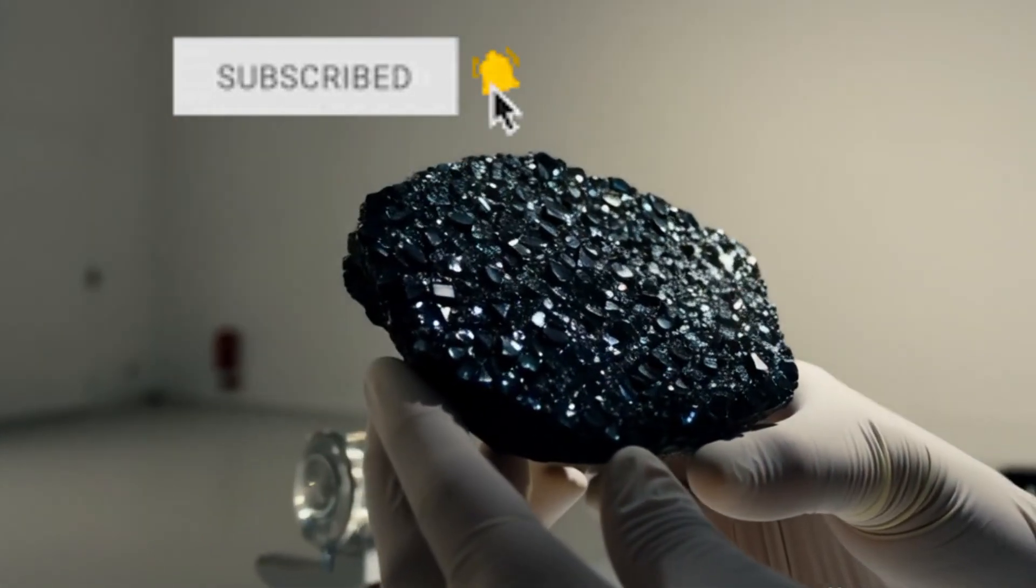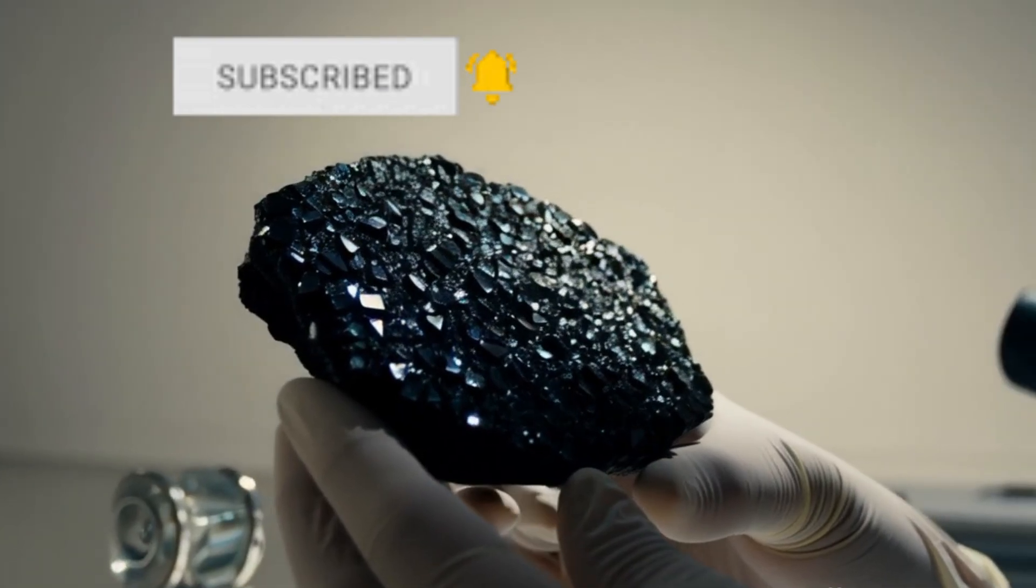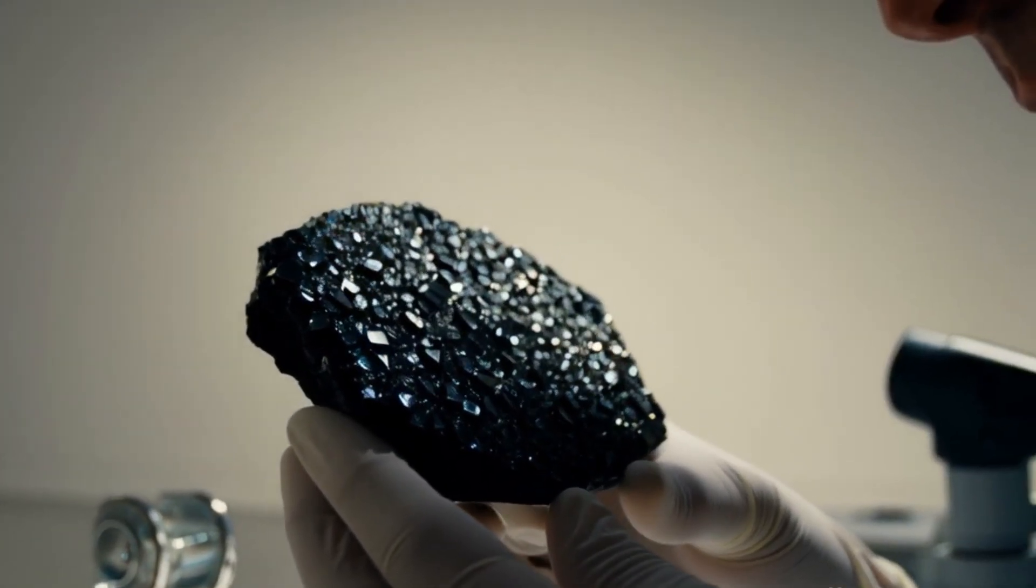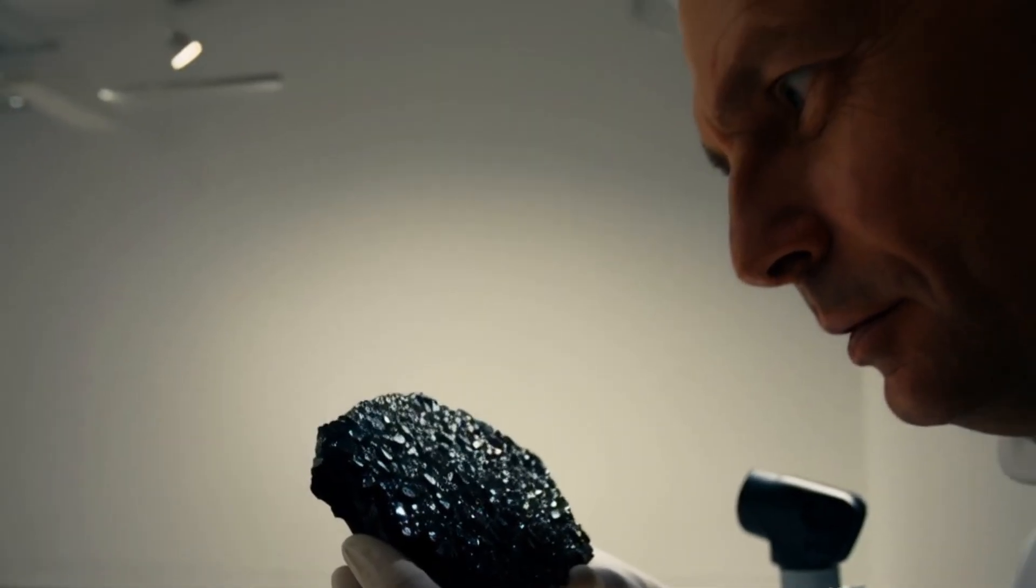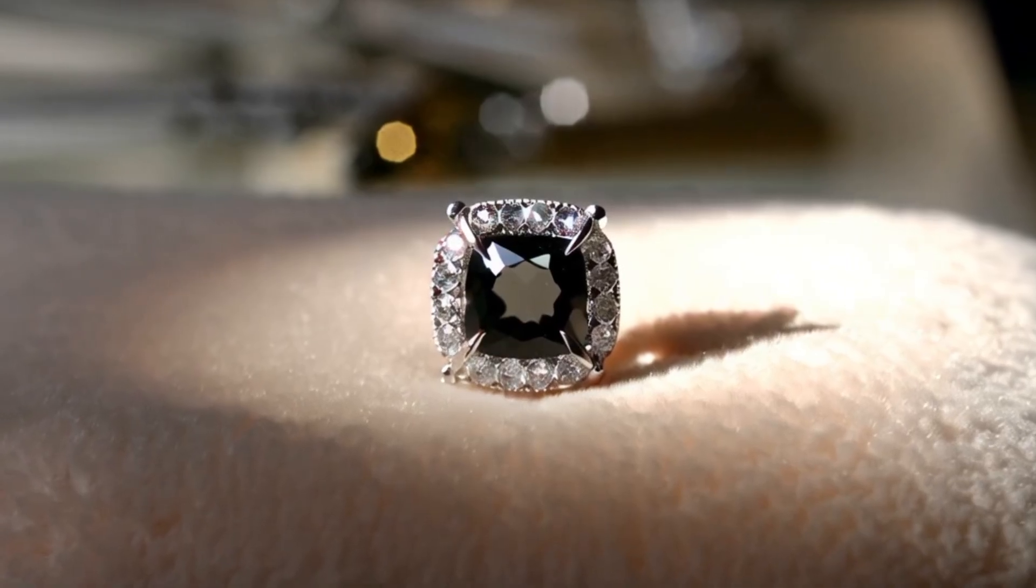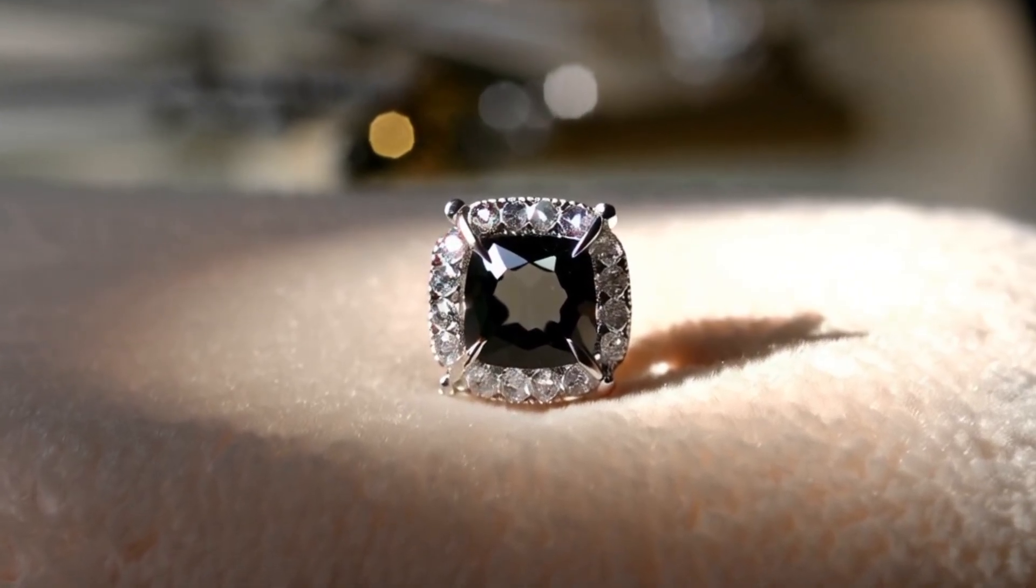Number two, test transparency. Hold the stone under a strong light source. Real black diamonds are completely opaque and no light passes through. Fake stones may allow some light to filter through, often revealing dark brown, gray, or reddish tones.